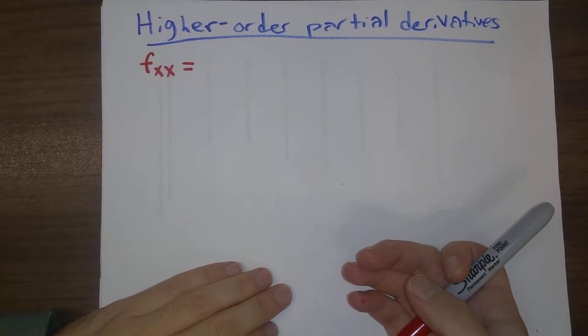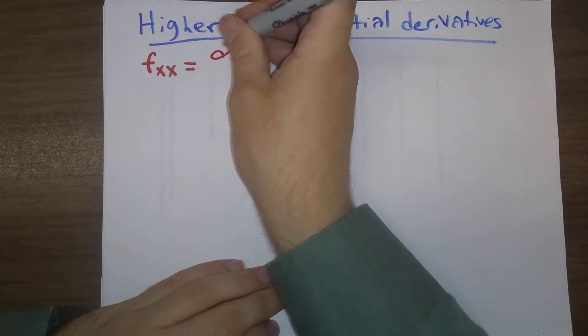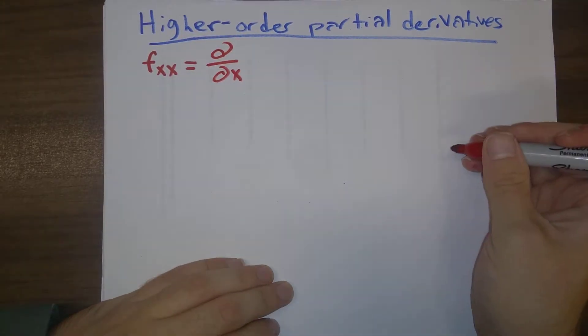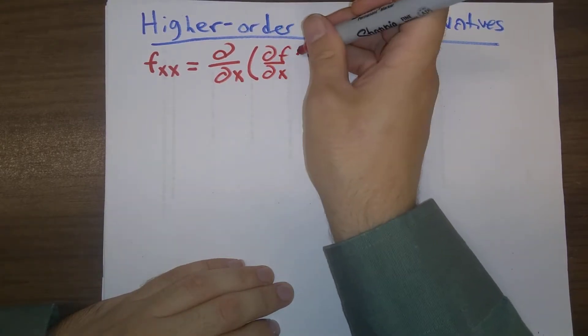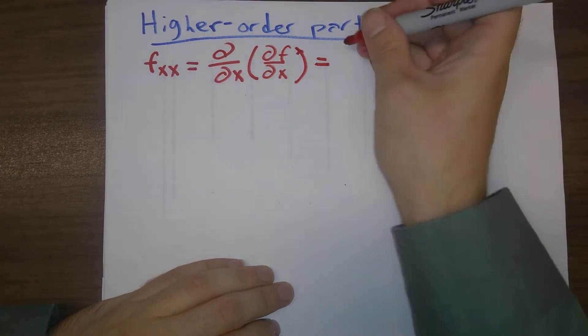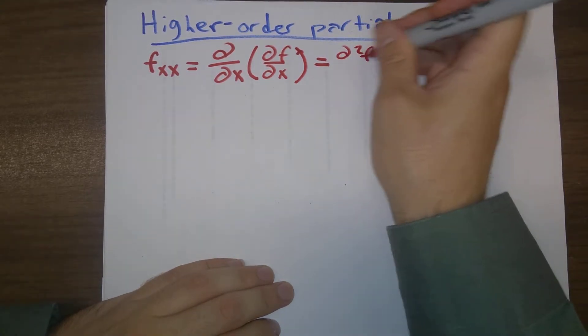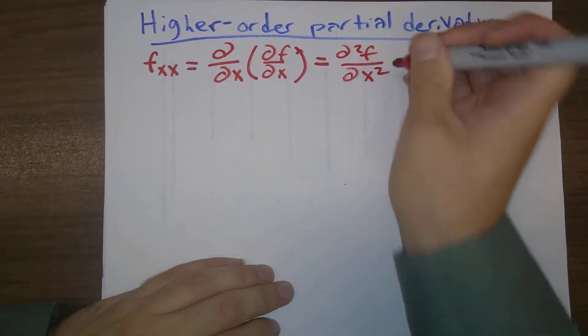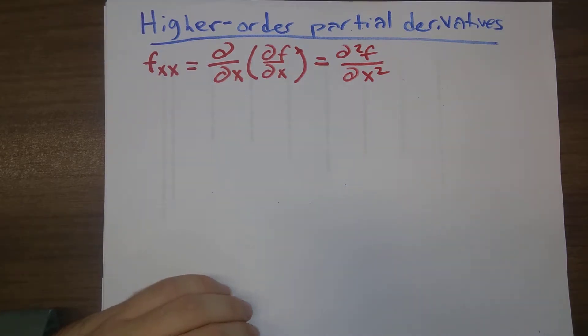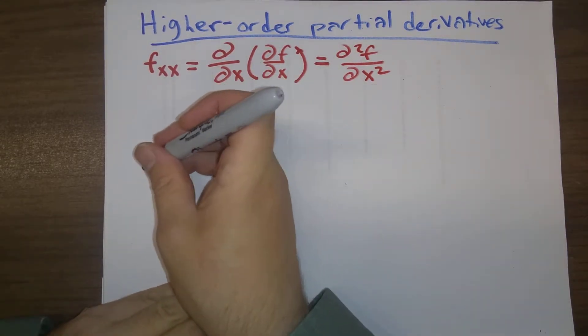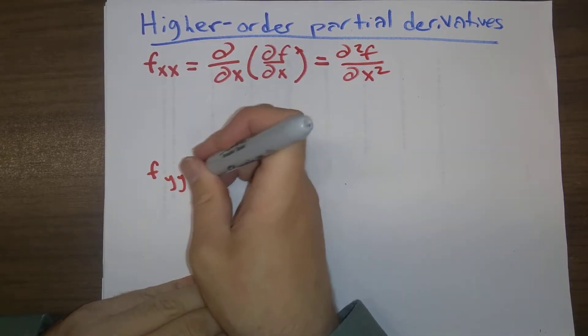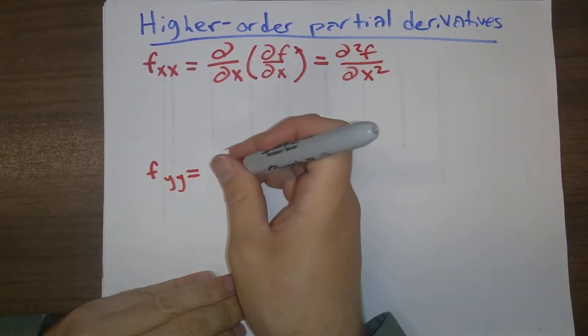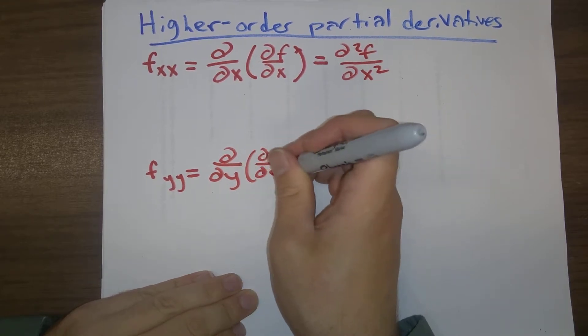So we could say fxx is the partial derivative with respect to x of the partial derivative with respect to x of f, or notationally, partial squared f over partial x squared. We also have fyy, which is taking two partial derivatives with respect to y.